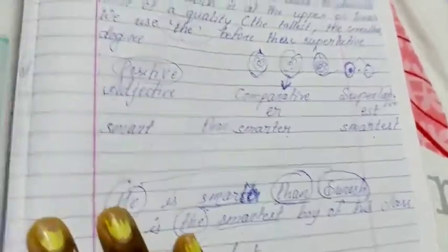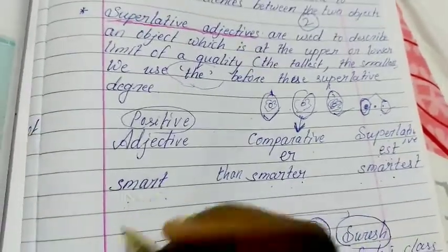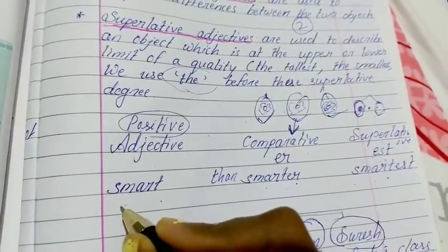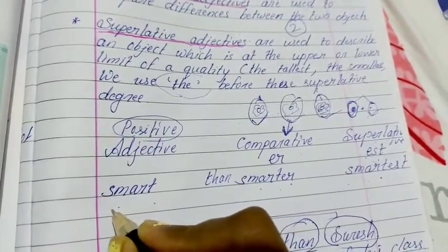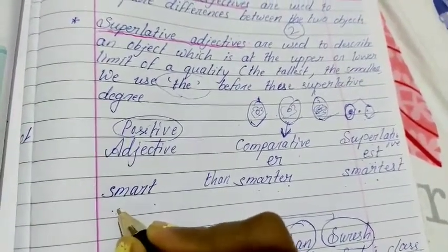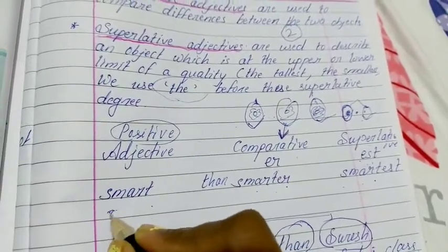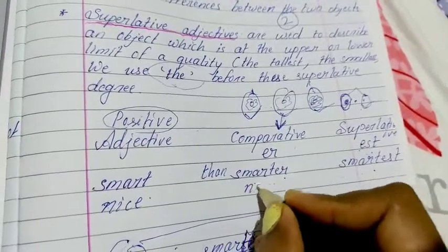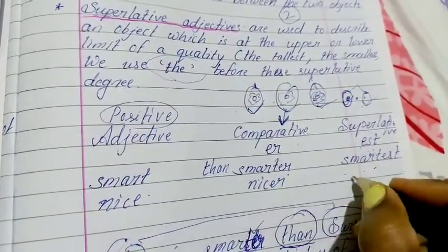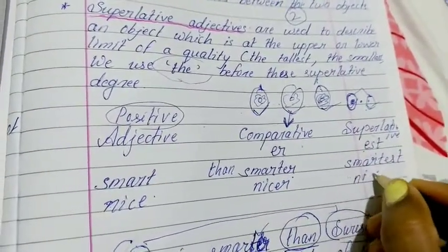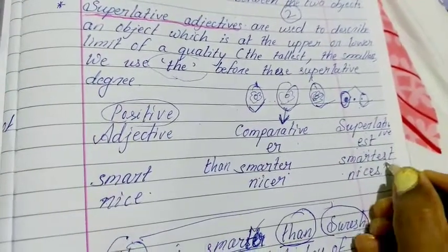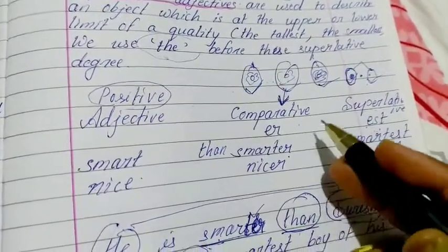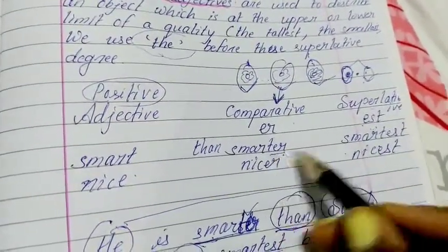Let us practice more with another example. 'Nice' is a positive adjective. The comparative degree is 'nicer', and the superlative degree is 'nicest'. However, this -ER and -EST rule does not apply everywhere — not all comparative and superlative forms are made this way.